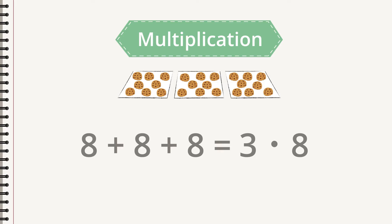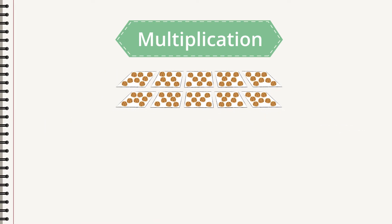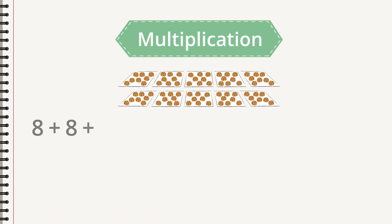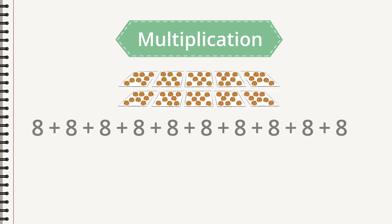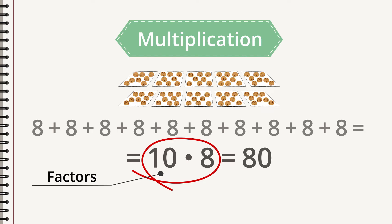Eight plus eight plus eight equals three times eight. If you bake ten sheets of cookies, the number of cookies can be described as a repeated addition, or, more simply, as a multiplication: ten times eight. These operations are connected. The numbers you use to calculate are called factors, and the result is a product.